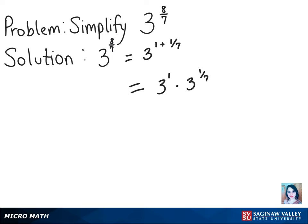And then that's just 3 times the 7th root of 3. And that's our final solution.